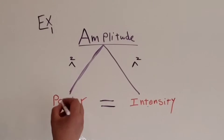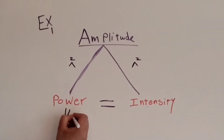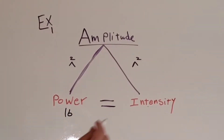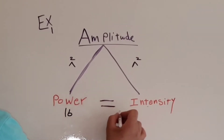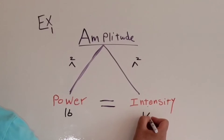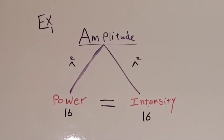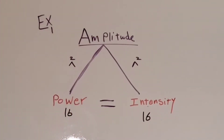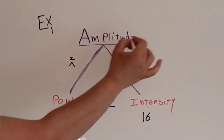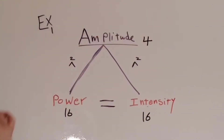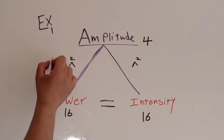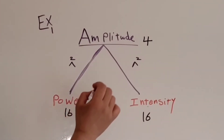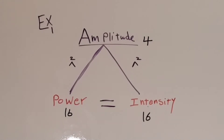Example number one: if the power increases by a factor of 16, what will happen to the intensity and what will happen to the amplitude? Because power and intensity always increase equally, the intensity will also increase by a factor of 16. And because power and intensity are proportionally related to the amplitude squared, the amplitude will increase by a factor of 4 — because 4 squared equals 16, since 4 times 4 equals 16.